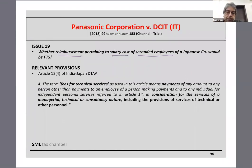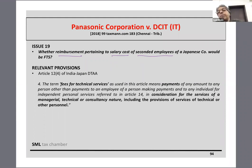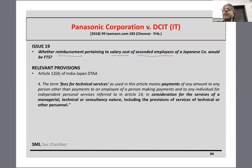The next three judgments deal with a very contentious issue - secondment. One can really have a webinar just on this; in fact, my colleague Mr. Dharan Gandhi had a webinar which may be worthwhile to look at. The issue is whether reimbursement pertaining to salary cost of seconded employees of a Japanese company would be FTS. A Japanese company seconded employees to India, paid the salary, and the Indian company reimbursed the salary to the Japanese company. Whether this reimbursement would be FTS and liable for tax deduction at source is the issue.